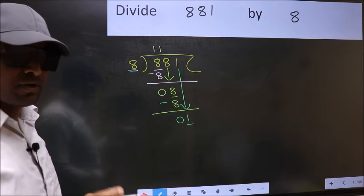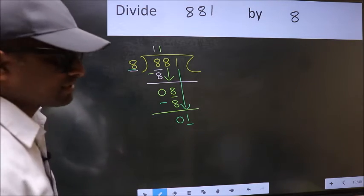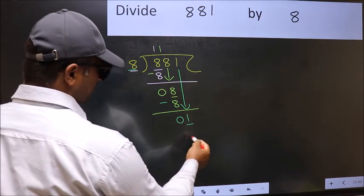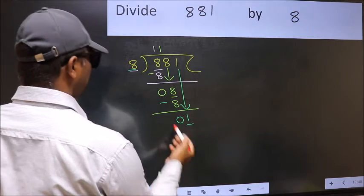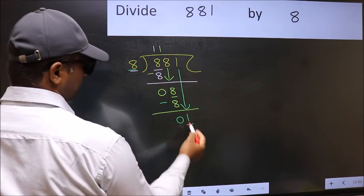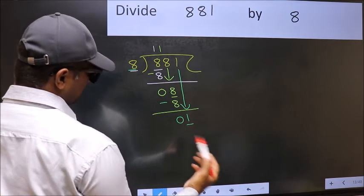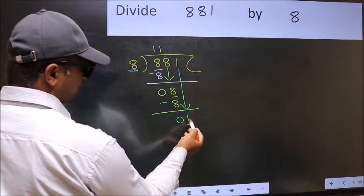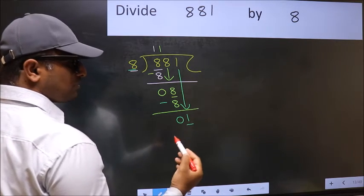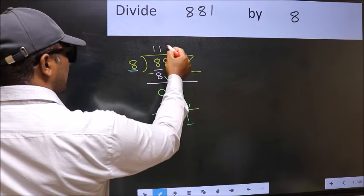Instead, what you should think of doing is which number should we take here. If I take 1, we will get 8. But 8 is larger than 1. So what we should do is we should take 0.